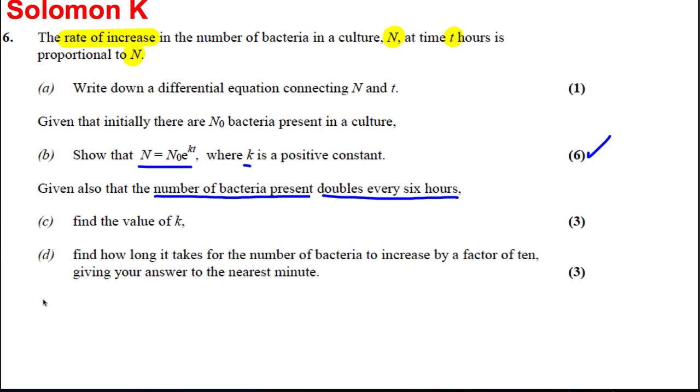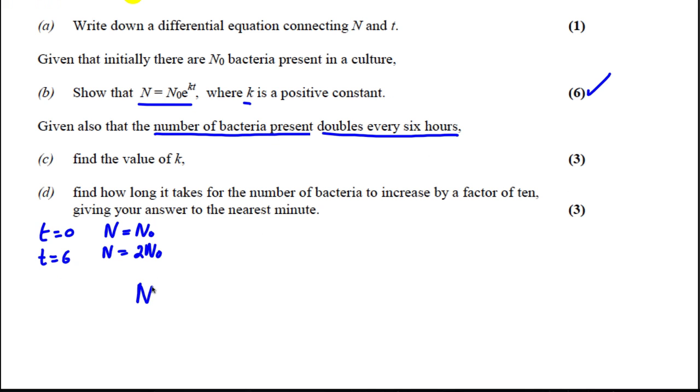Okay, so it's telling us that the number of bacteria present doubles every six hours. So you can say that when T is equal to 0, N, the number of bacteria is equal to N₀. So therefore, you can say that when T is equal to 6, the number of bacteria is now equal to 2N₀. You had the differential equation that N is equal to N₀e^(KT). So if you substituted T is equal to 6 and N is equal to 2N₀ in here...